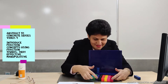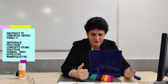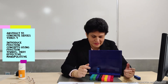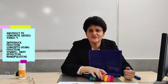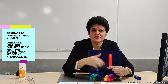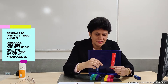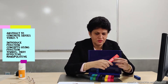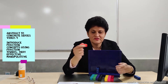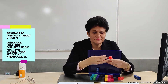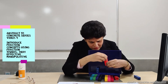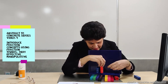Now the child looks for a denominator of three — a whole piece divided into three parts. If the child has the concept, he identifies the piece divided into three parts, holds one and picks two more. So he has one by three, then two by three, makes a tower out of it, and places it alongside.